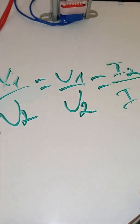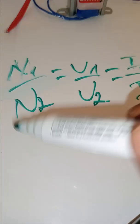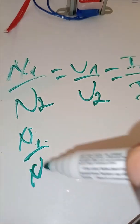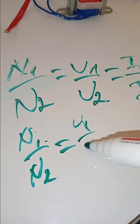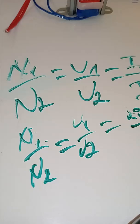To calculate the turns will be easy because we will be having N1 over N2 which is equal to V1 over V2, and you will be having 220 over 12.